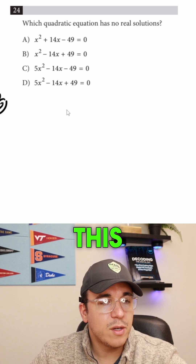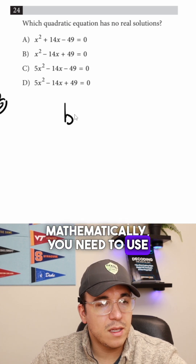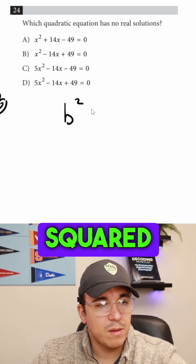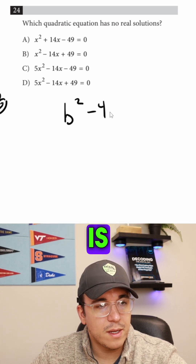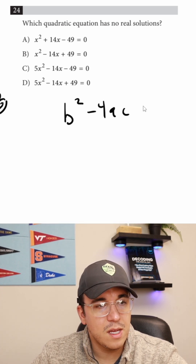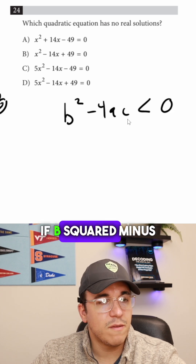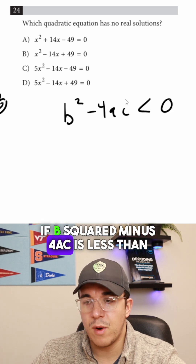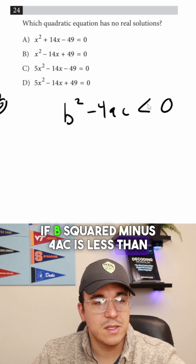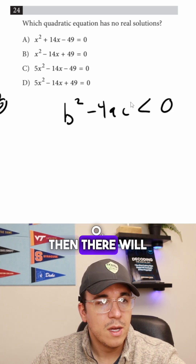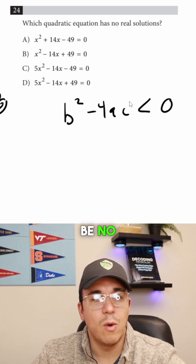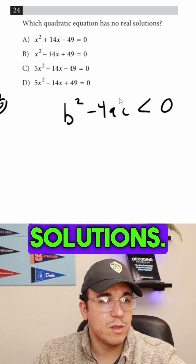But if we want to do this mathematically, you need to use the formula b squared minus 4ac is less than zero. If b squared minus 4ac is less than zero, then there will be no real solutions.